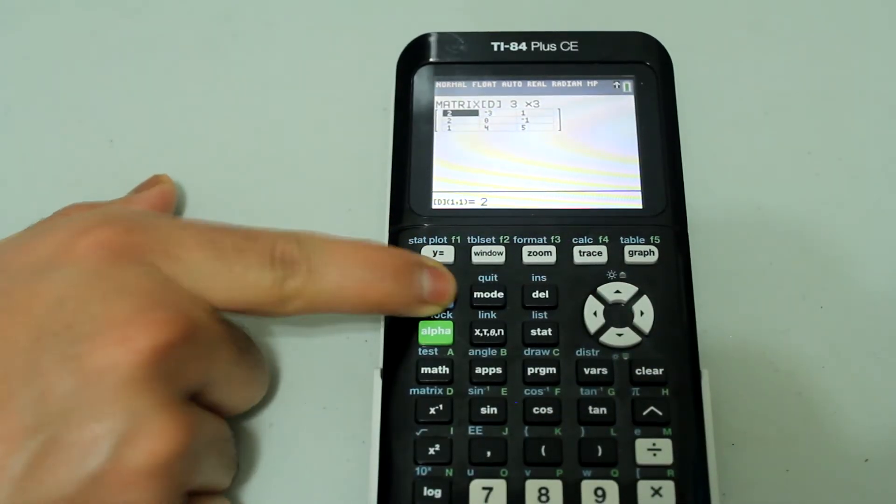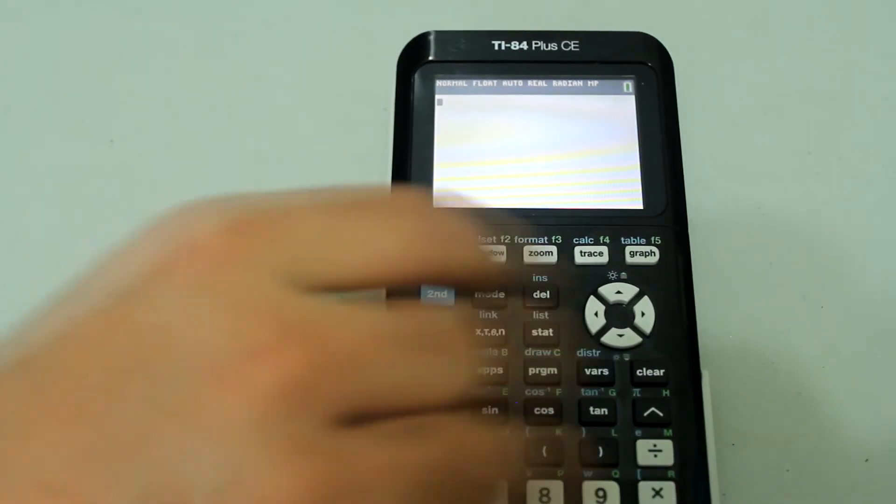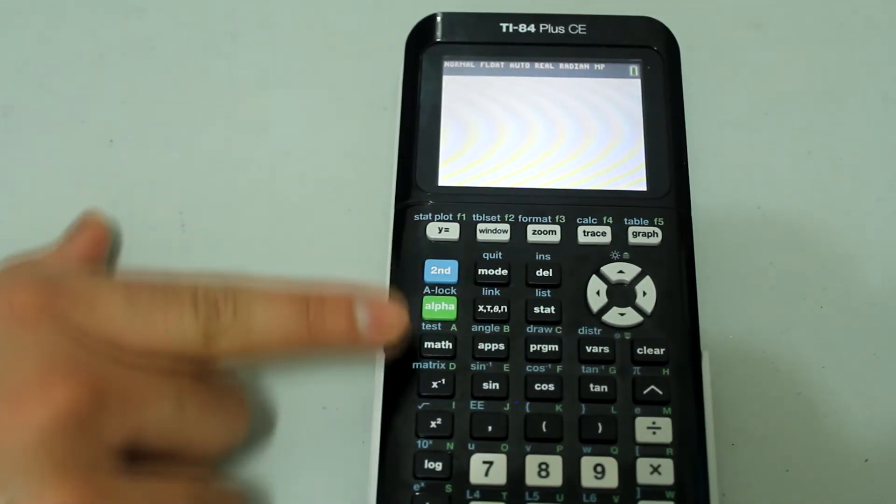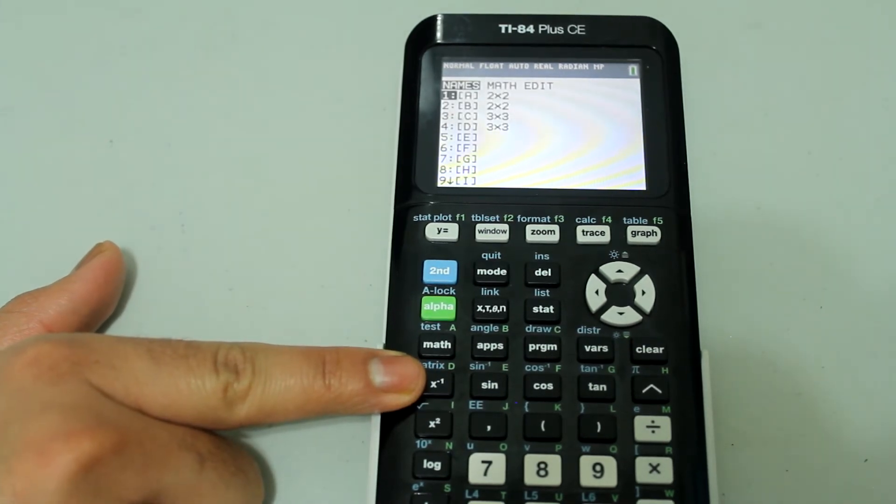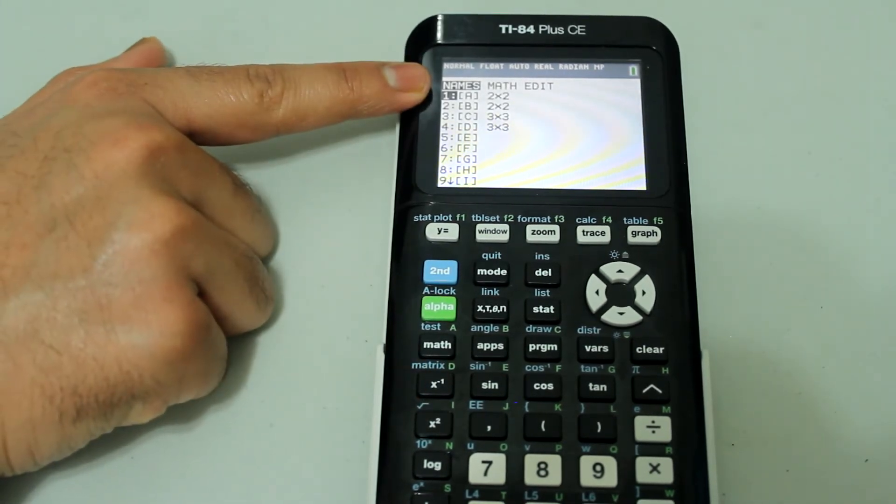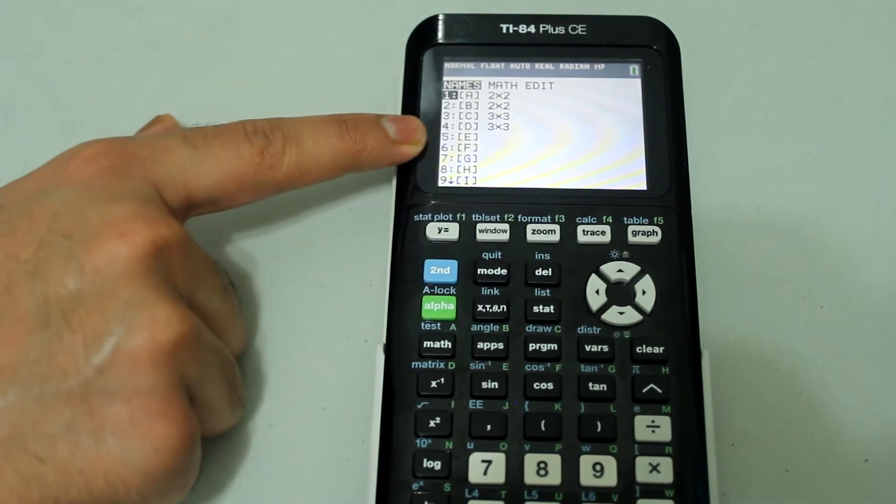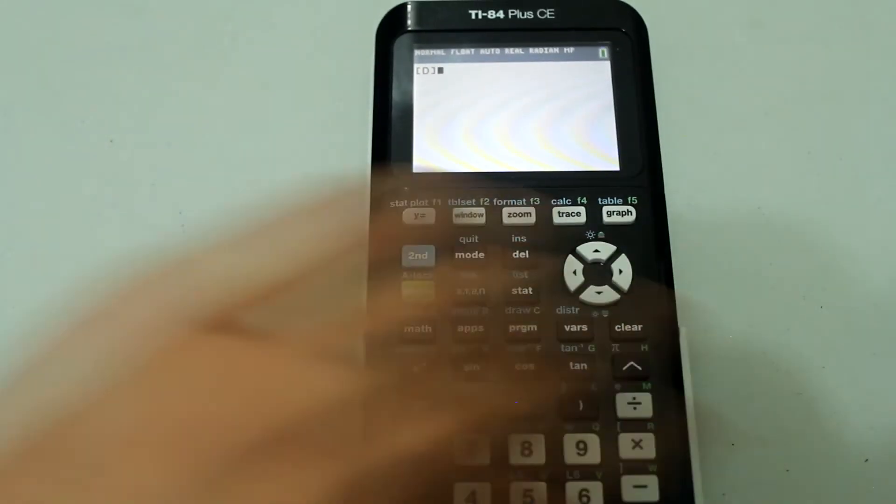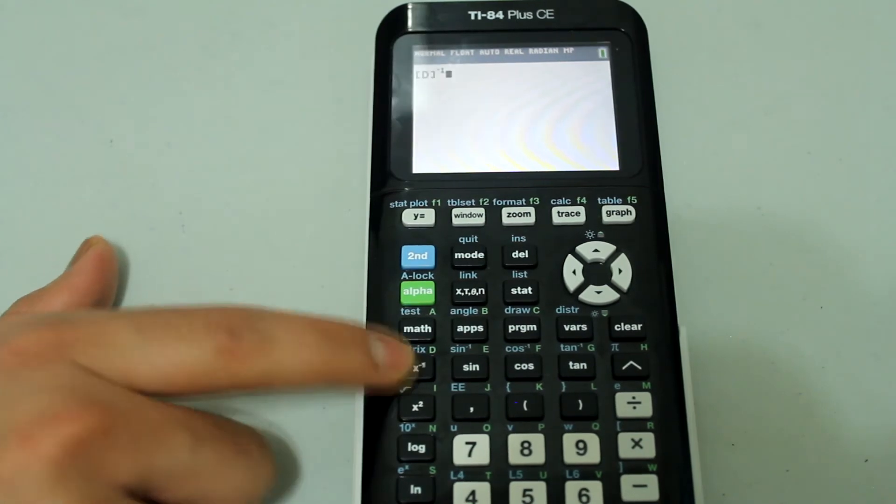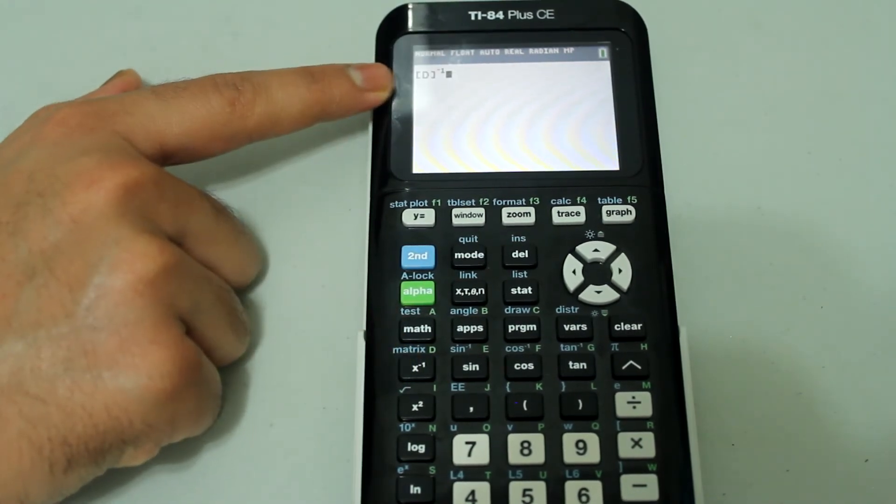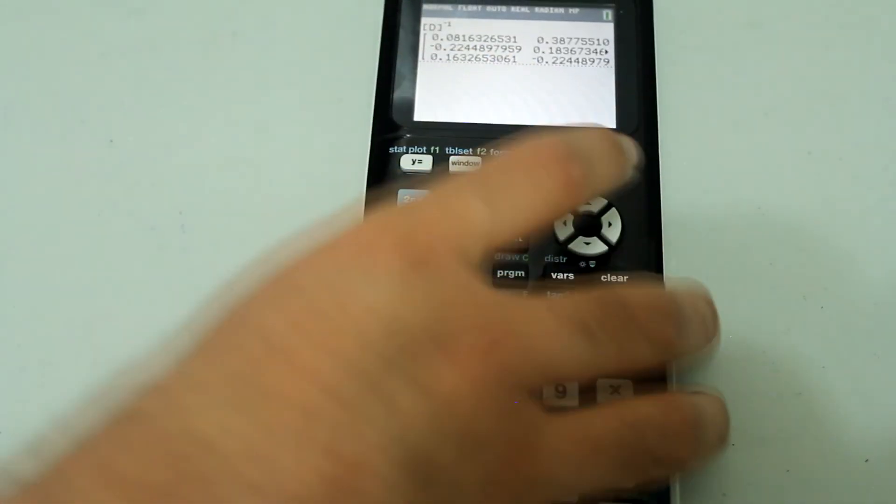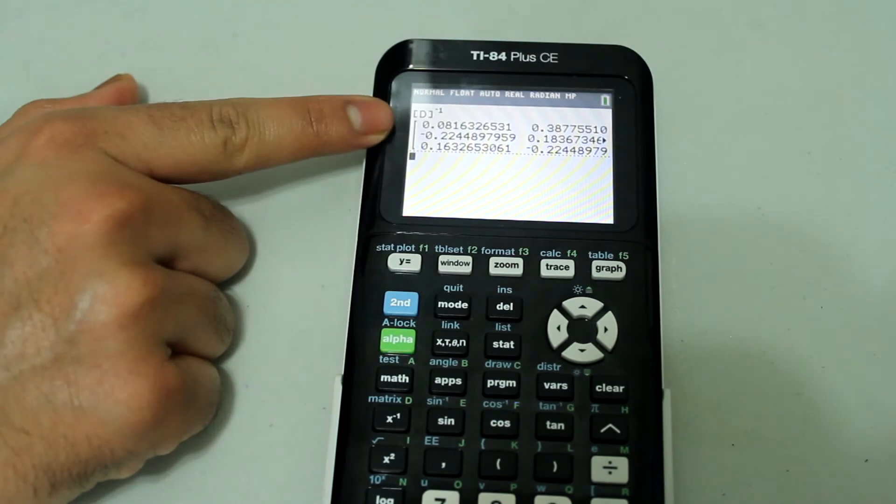So now we're going to press 2nd mode to quit. Then we're going to press 2nd, X to the negative 1 to go back to the matrix menu. While we're under names, this time we're going to select D, so we're just going to press 4 on the number pad. Then we're going to press X to the negative 1, so it looks like this. And then press enter. And the matrix comes out in decimals.